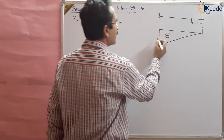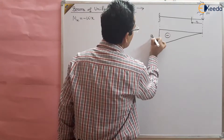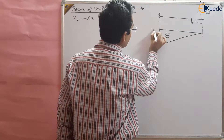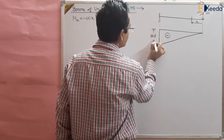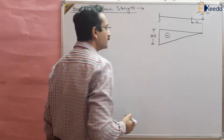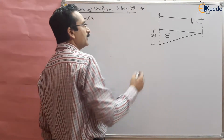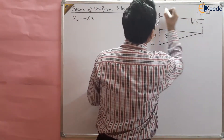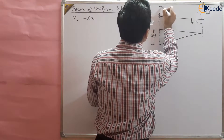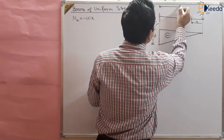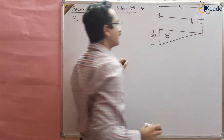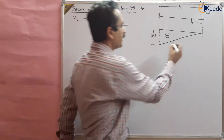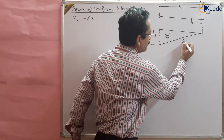Here you will be getting the bending moment wl, if l is the length of the beam. This is the bending moment diagram of this cantilever beam.